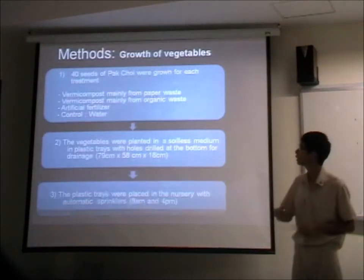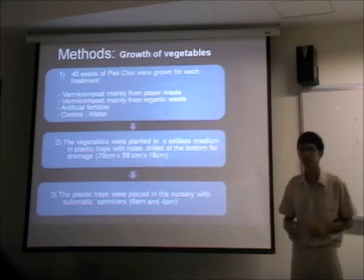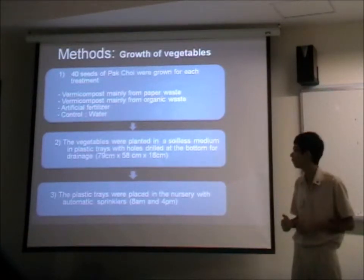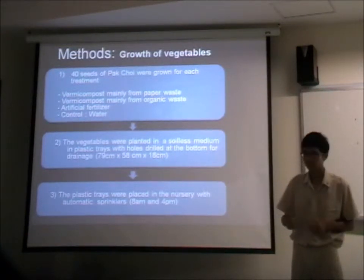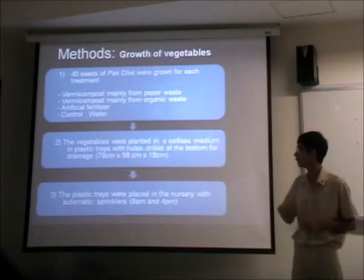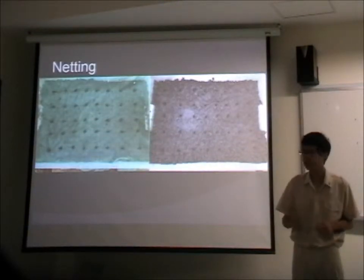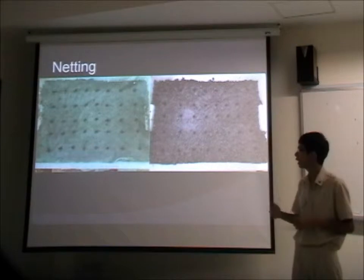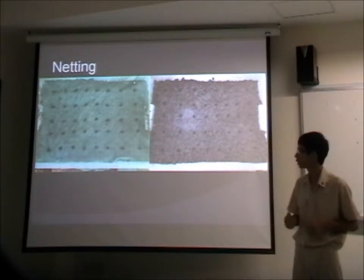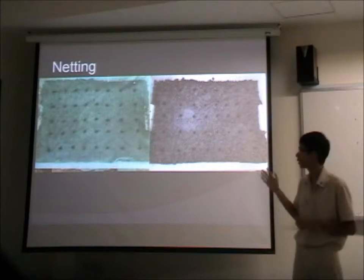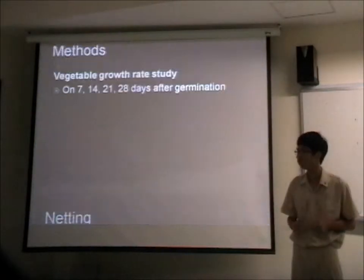To grow the vegetables, seeds are planted in soil in plastic trays and placed in a nursery where they are watered. To mitigate the effects of overwatering, a green additive specifically for plant growth was placed on top of the soil as a medium, and the seeds were evenly distributed.